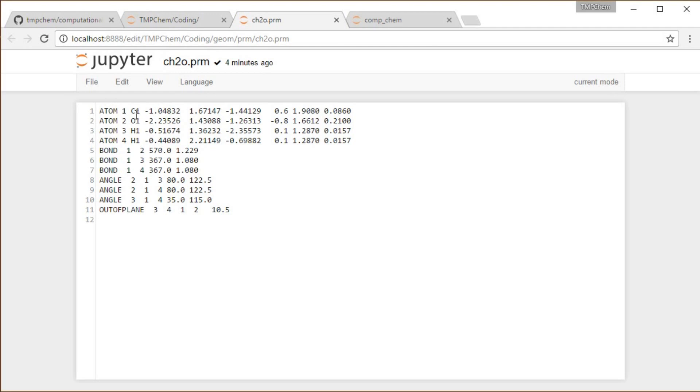We have the four atoms there, atomic identities, XYZ coordinates, and some non-bonded parameters that are not relevant right now. We have the bonds, so each of them are bonded to the carbon atom one. There are the bond angles, three bond angles, and then the out-of-plane angle defined by its atomic indices there. I have 10.5 as the value of the parameter for my rotation barrier going out of plane.